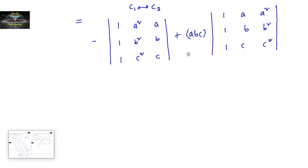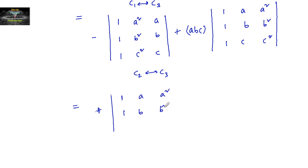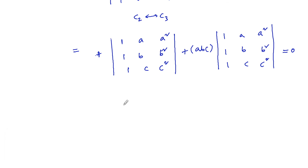Now interchanging the second and third columns in the first determinant gives another sign change (negative of negative = positive), yielding the determinant (1, a, a²), (1, b, b²), (1, c, c²). Combined with the second part, we get: (1 + abc) times the determinant with rows (1, a, a²), (1, b, b²), (1, c, c²), which equals 0.